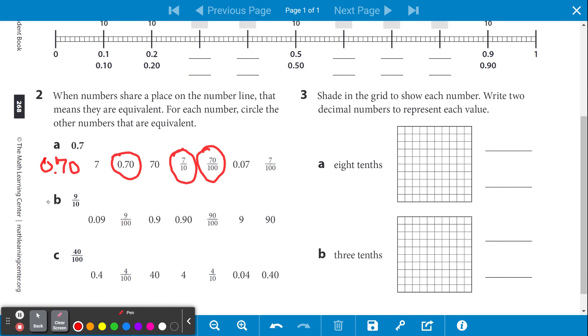B says 9 tenths. 9 over 10 can be represented like this or this, and it's also equivalent to 90 over 100.